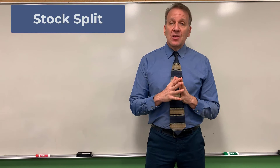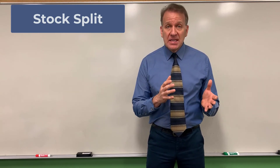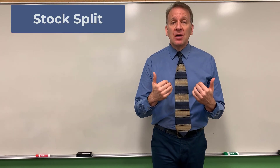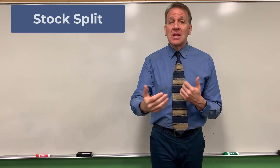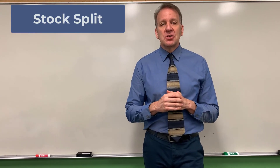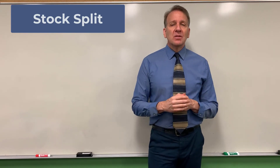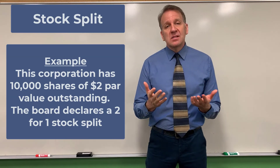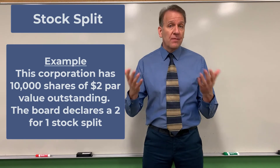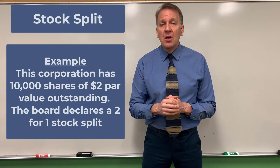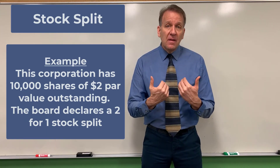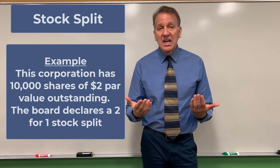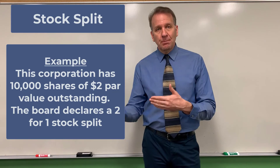Now let's look at a stock split. A stock split is different from a stock dividend. What happens is the corporation calls in the shares and reissues additional shares to those same shareholders — a distribution of additional shares to shareholders of record. For example, before the split we have 10,000 shares, and this is a two-for-one stock split. It could be three-for-one, four-for-one, ten-for-one — whatever the corporation wants. Two-for-one means if you own one share, after the split you own two shares.